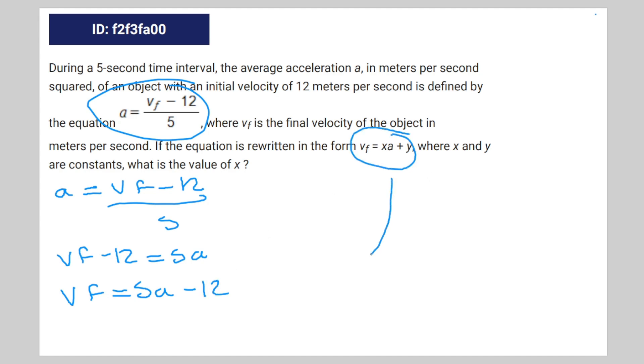And then if we take this equation and put it down over here, you'll see that these two equations are mirror images of each other with only two differences, the 5 and the negative 12. Therefore, x is equal to 5 and y is equal to negative 12. But they're only asking you for the value of x, therefore the correct answer is 5.